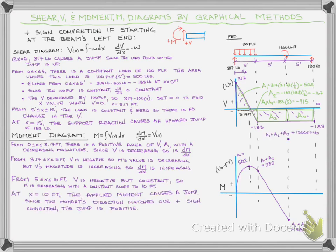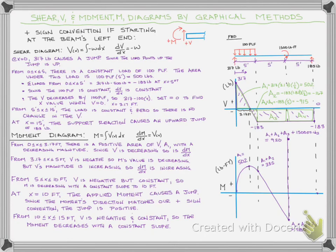Now we need to add in that applied moment. The moment is going clockwise, which is the direction we defined as positive, so that's going to cause a positive jump. Adding that to A1 plus A2 plus A3, we're going to have 920 and a straight upward jump. Finally, our last area to add is just like area three — negative shear, subtracting from our moment, constant slope. So we'll have 920 minus 915, which leaves us with 5. It's not quite zero, but it's less than 1% error when you look at that 920 value — no big deal. And we're going to have a constant slope back down to zero.